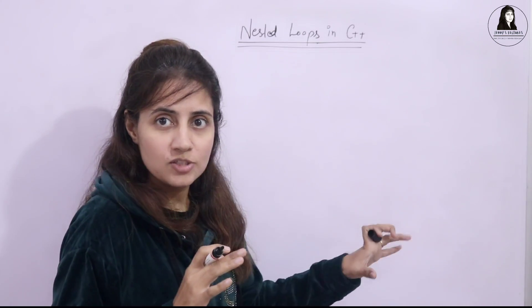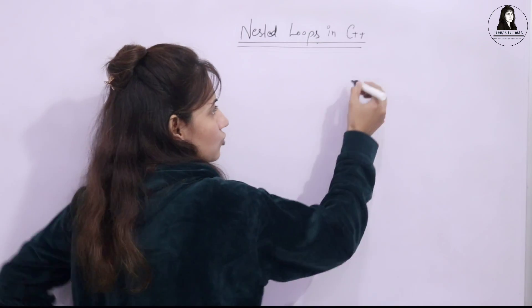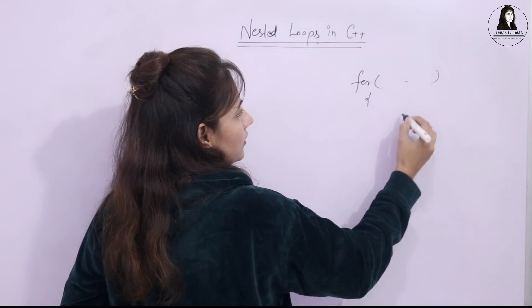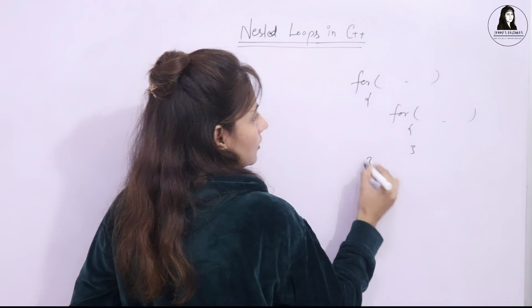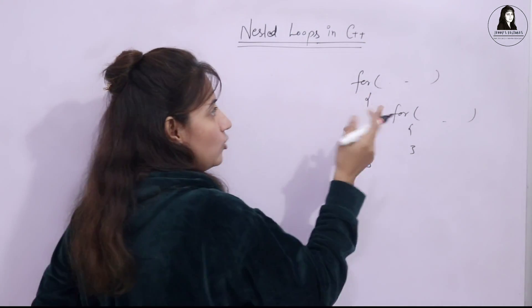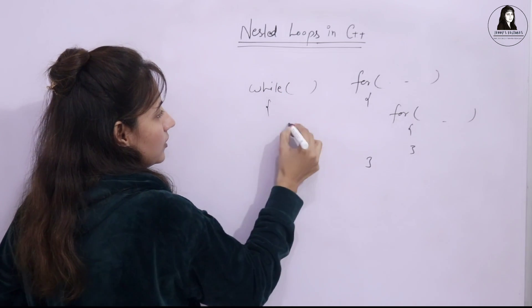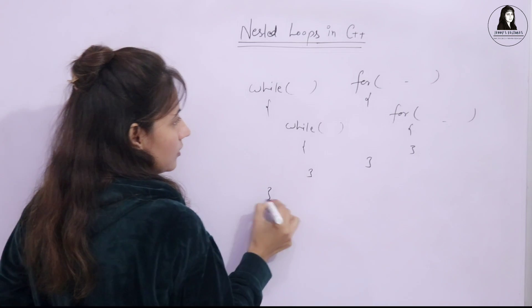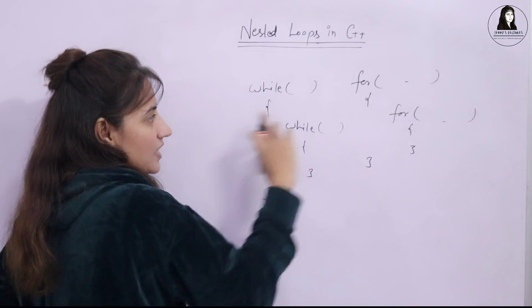Nested loops can be for loops, while loops, do-while loops, and so on. We can have a for loop, and within this for loop, we have another for loop — that is a nested for loop. Similarly, if you have a while loop with a condition, and within it we have one more while loop, that is a nested while loop.